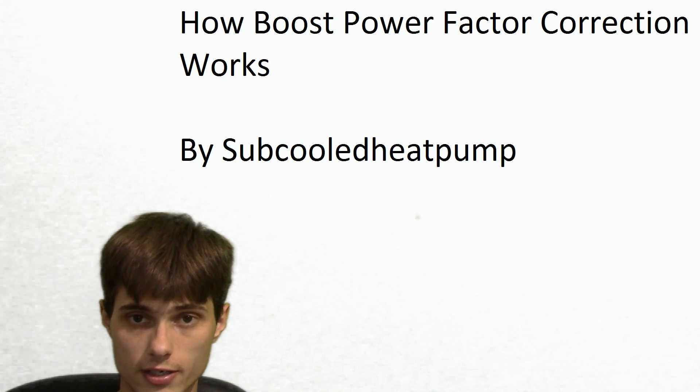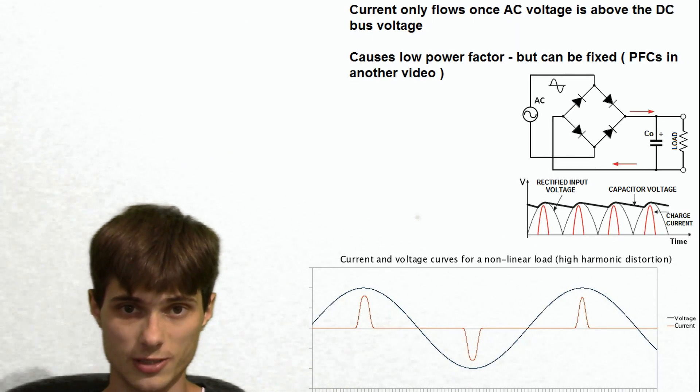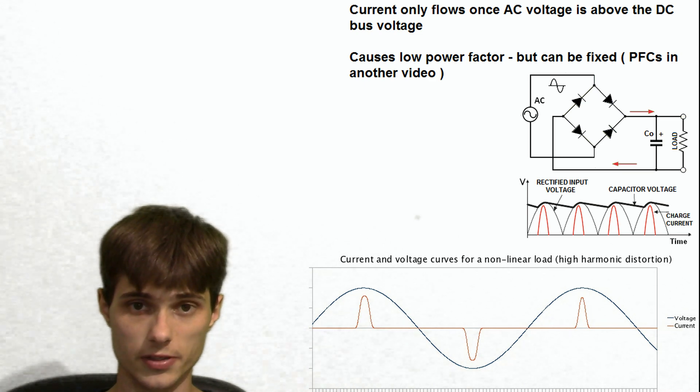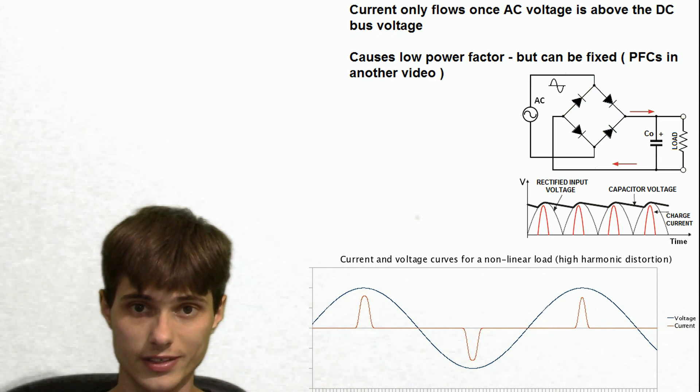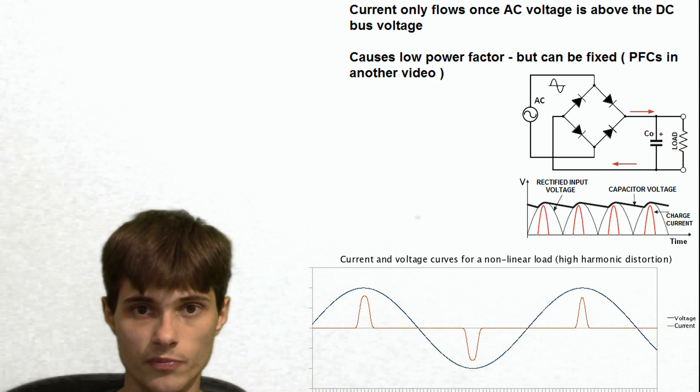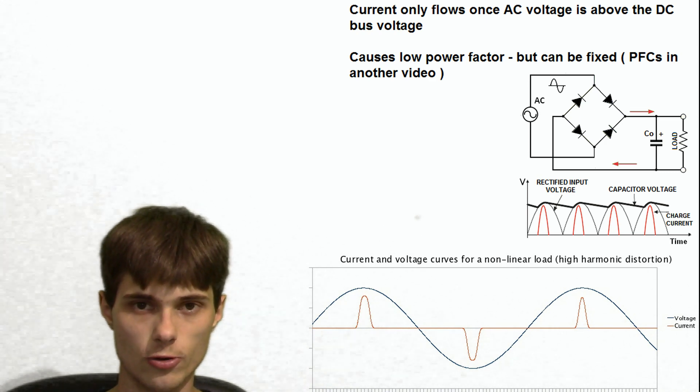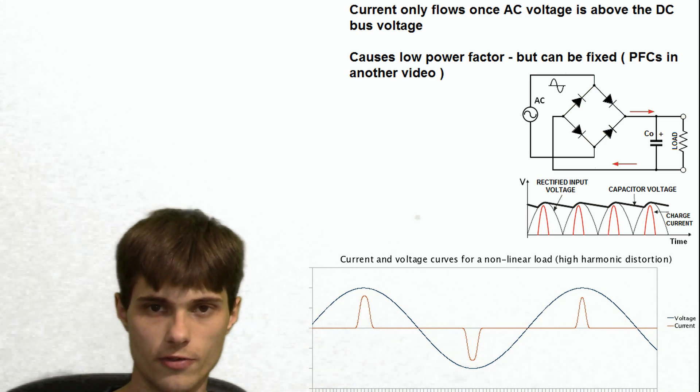So we saw how a rectifier and a capacitor hooked to the AC line really messed up the power factor because the output capacitor was only charged right when the sine wave, the AC line, peaked in voltage. In any other time, current wasn't flowing so that makes all kinds of problems. Noise, poor power factor, all manner of other problems.